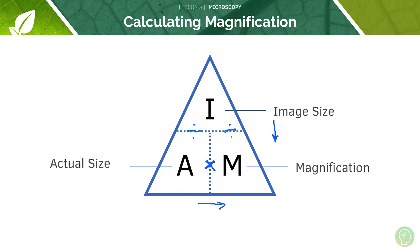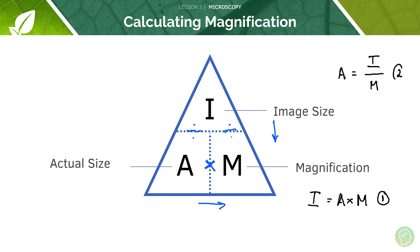Written out as standard equations: equation one is I equals A multiplied by M, where I is image size, A is the actual size of the object, and M is magnification. Equation two is A equals I over M. Equation three is M equals I over A. If we want to find I, we multiply across; if we want A, we do I divided by M; and to find M, we do I divided by A.